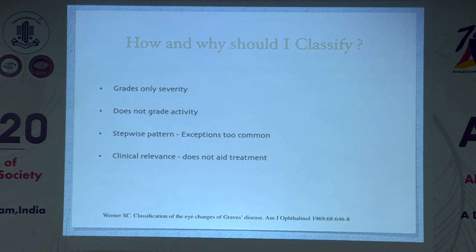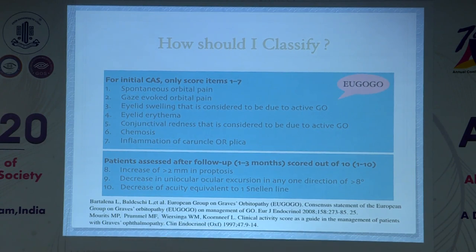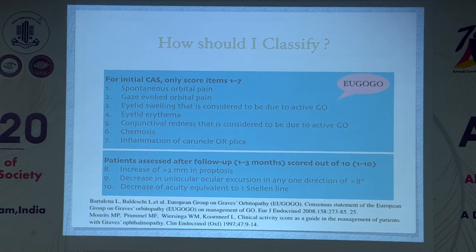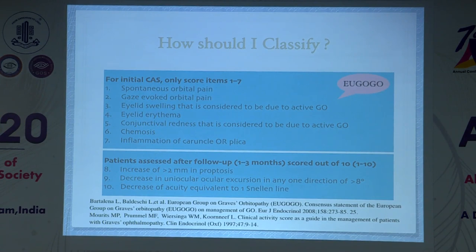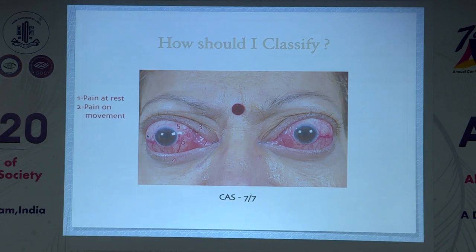Looking at classification systems: the older NO SPECS classification by Werner has disadvantages — it does not show a typical stepwise pattern and does not grade activity. The two commonly followed systems are EUGOGO (European Group on Graves' Orbitopathy), which uses a Clinical Activity Score (CAS), and the VISA classification. For initial presentation, CAS uses a seven-point system: two points for pain (spontaneous and gaze-evoked), two for eyelid swelling and erythema, two for conjunctival injection and chemosis, and one for caruncular or plica inflammation.